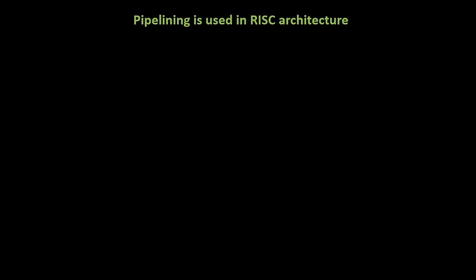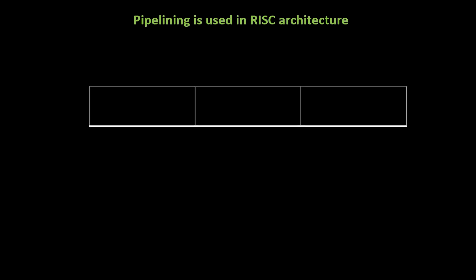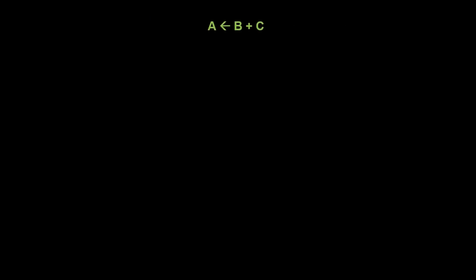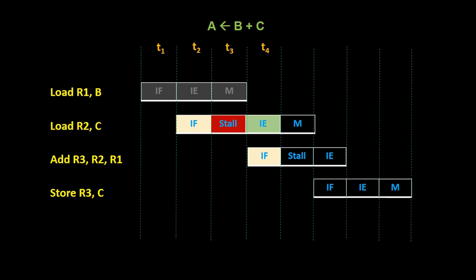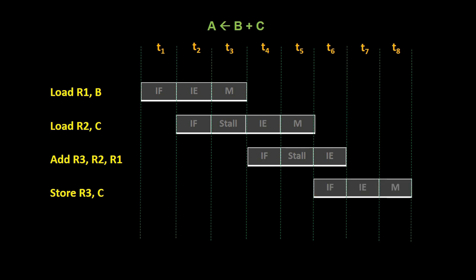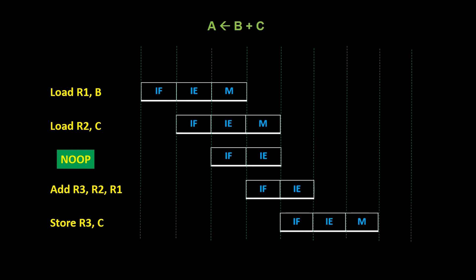Now let's learn how the concept of pipelining is used in RISC architecture. In RISC architecture, instructions typically go through two stages for arithmetic and logical operations. The first stage is the instruction fetch stage, where the instruction is fetched from memory. The second stage is the instruction execute stage, where the ALU performs the operation using the registers. However, for load and store instructions involving memory accesses, an additional stage called memory store is introduced. Let's consider an example instruction. We can create a RISC instruction set for this computation. The instruction set would include load instructions for fetching the values of B and C into registers, an ADD instruction to perform the addition using the registers, and a STORE instruction to store the result back into memory. By utilizing pipelining, we can overlap the execution of multiple instructions, resulting in faster execution. However, in cases where the memory is single-ported, the execution stage of the second instruction may experience a stall, waiting for the completion of the memory stage of the first instruction. To overcome this, no-operation instructions can be inserted into the instruction stream.